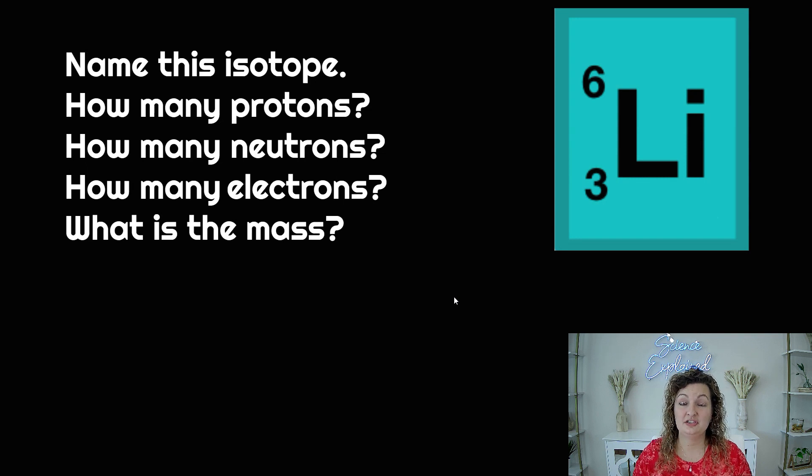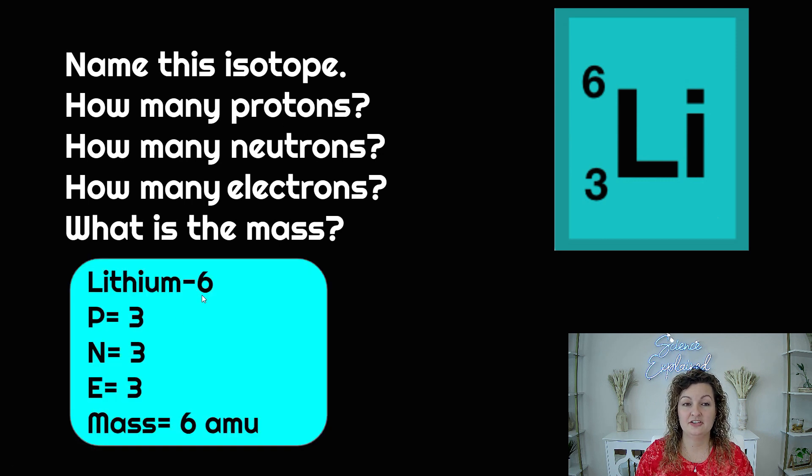Okay, so this is isotope notation. Let's try to see if we can figure these out. First, we need to name this isotope. Well, Li, we can look on the periodic table, and that is lithium. We need to put the little dash mark, and then we need to write its atomic mass. In isotope notation, the mass is going to be in the upper left-hand corner. So this is going to read lithium-6.